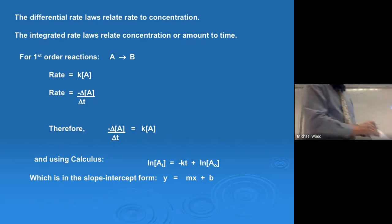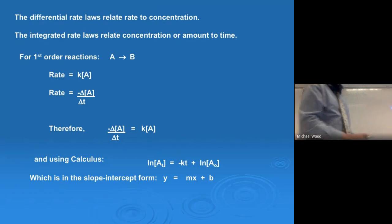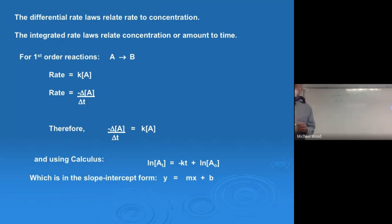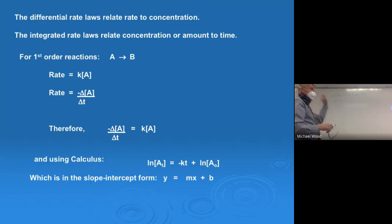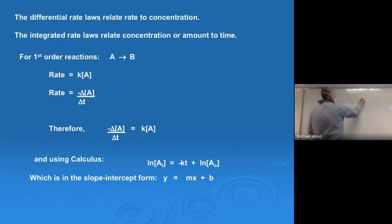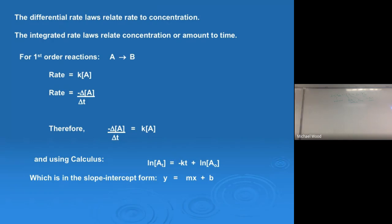This is called the integrated rate law, and this is for a first order reaction. We're going to do some new plug-and-chug problems. In the equation, [A]t is the ending or final concentration, k is the rate constant, t is the time, [A]₀ is the initial concentration, and ln is the natural log. Tomorrow I'll do a couple of problems using this equation.